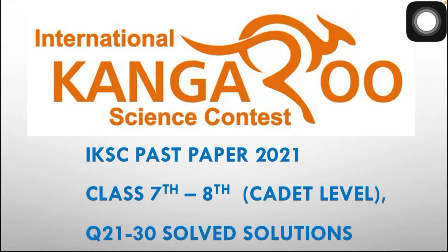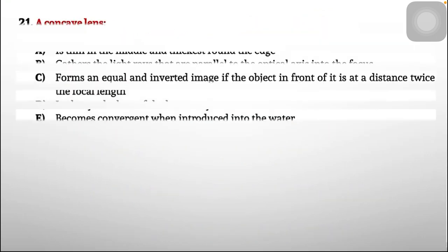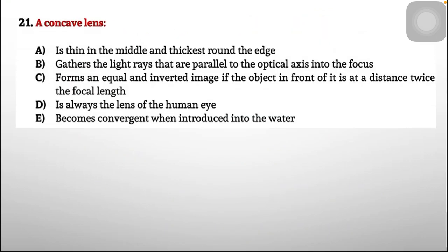This is the IKSC International Kangaroo Science Contest, and I'm going to solve questions 21 to 30 for the past paper 2021 for class 7 and 8, also called category level.